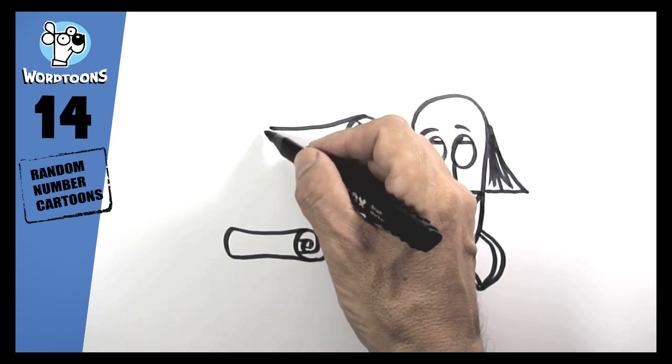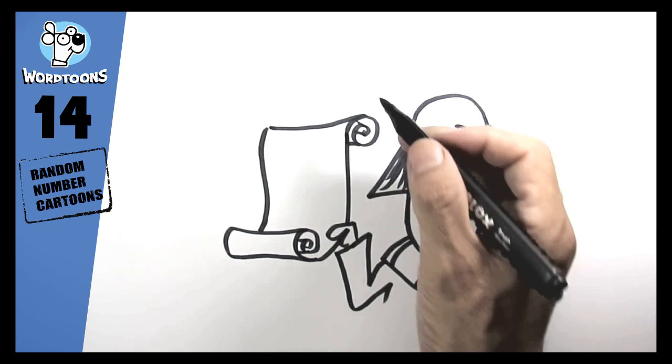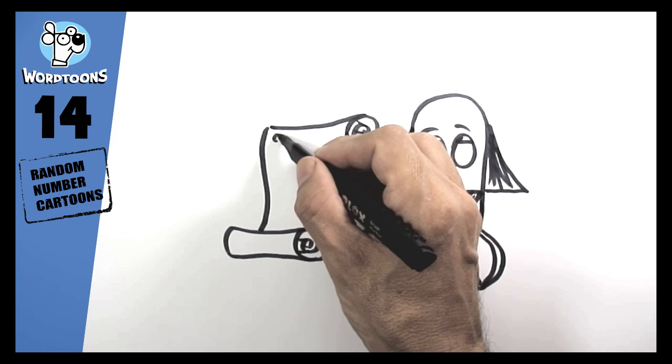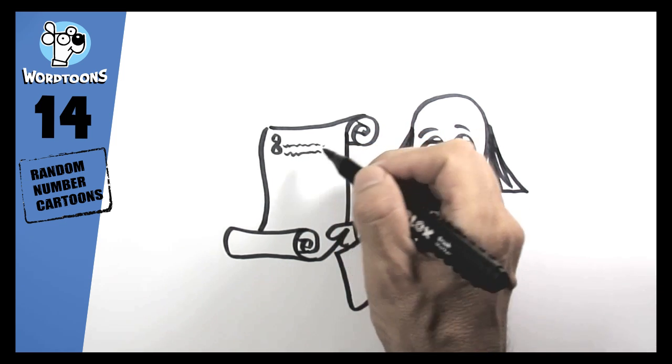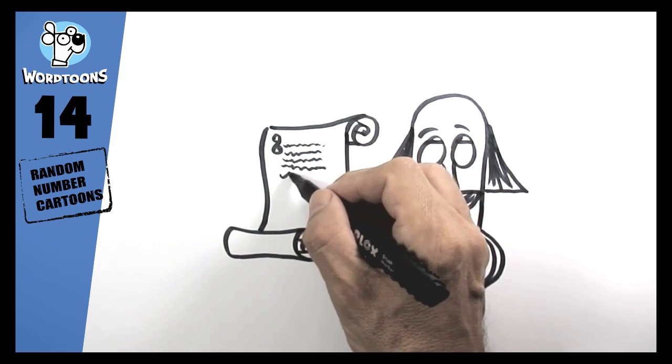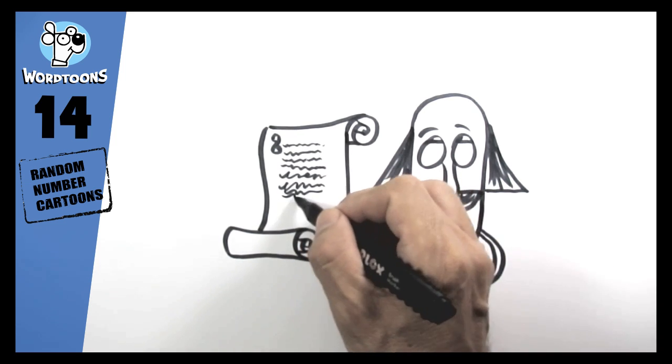Shakespeare wrote 154 sonnets so he wrote a lot of things. So let's do it, 2, 3, 4. So I've written a few poems. Have you written any poems?